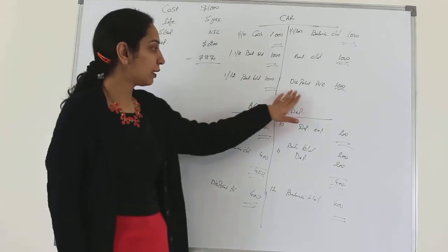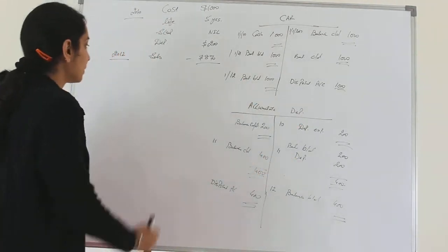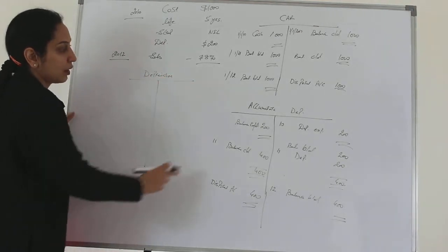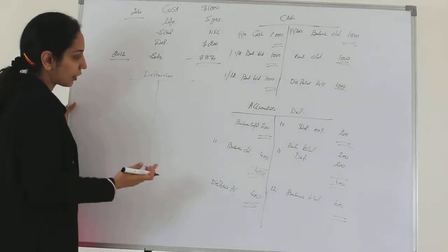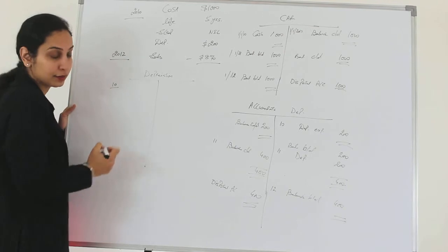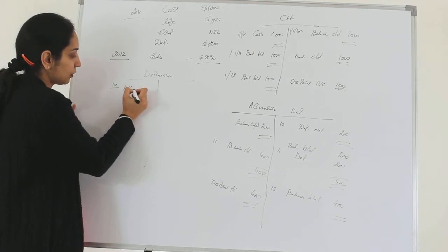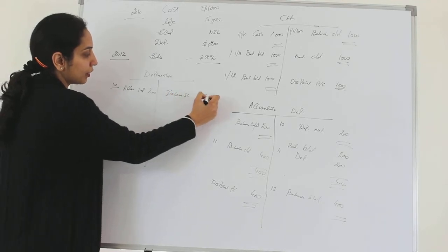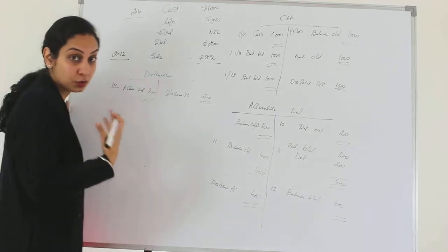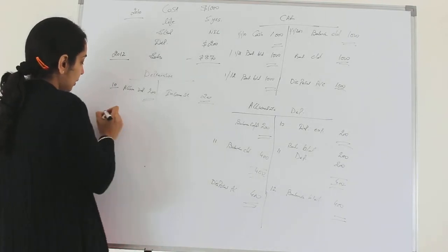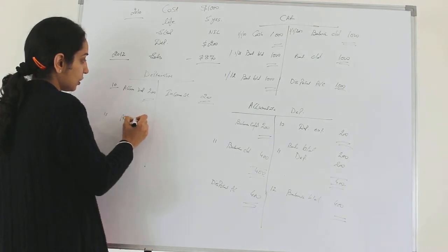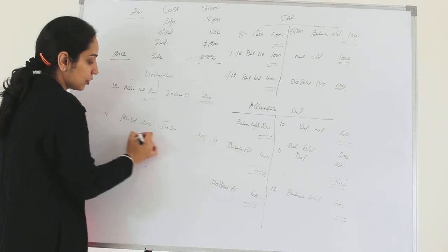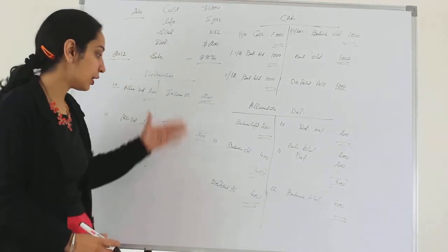Now we have already made the car account and the accumulated depreciation account. Let's make the depreciation account. The depreciation account is very simple. As we parked our depreciation in accumulated depreciation, in year 2010 we show accumulated depreciation here by $200, and then it will be transferred to the income statement on the debit side. Nothing from depreciation will be taken to the balance sheet. Again in year 2011, same entry — accumulated depreciation $200 — and it will be taken to income statement as $200. That's all about the depreciation account as it doesn't require too much adjustment.